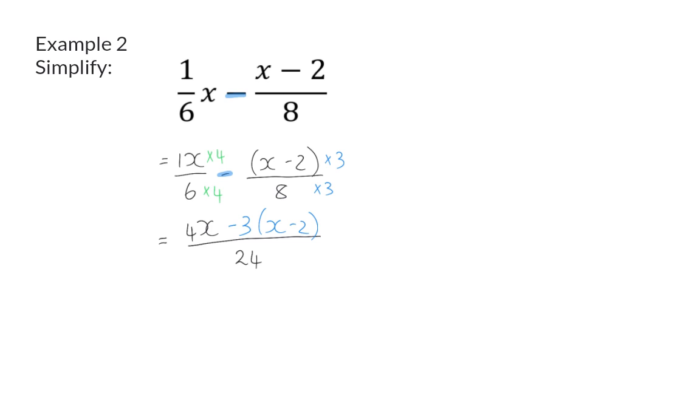So, in the numerator, we now have 4x minus 3x, and then the important one is to realize that it becomes plus 6 when you multiply the minus 3 in. The like terms of 4x minus 3x can now be put together to get 1x, and then we still need to add the 6, and here we have our final answer.